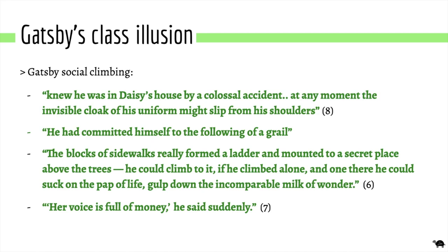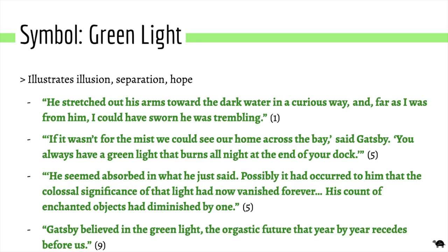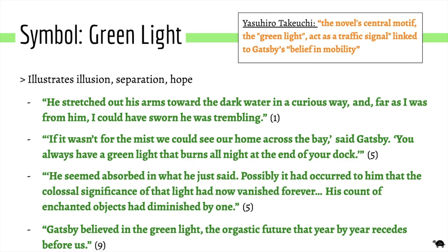Regarding Gatsby's class illusion, it's particularly interesting that his military uniform is described as a cloak, and the biblical imagery of climbing a ladder to a secret place is associated with Daisy. He associates a dreamlike place with Daisy — perhaps he isn't really in love with her but is drawn by the pull of being successful and going against his early life. The green light is another iconic symbol: it represents hope to Gatsby yet also a barrier between them. The light isn't even something physical that Gatsby can grab, emphasising the class divide. A critic has linked the green light to a traffic signal, which is a very interesting image.